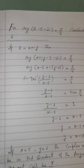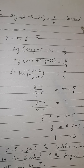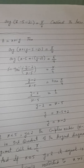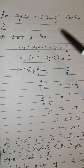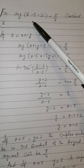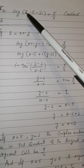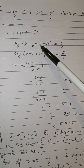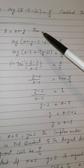The question is: given that argument of (z − 5 − 2i) equals π/4, construct the locus of z. Since z is a complex number, let z = x + iy. Substituting, we get argument of (x + iy − 5 − 2i) = π/4.